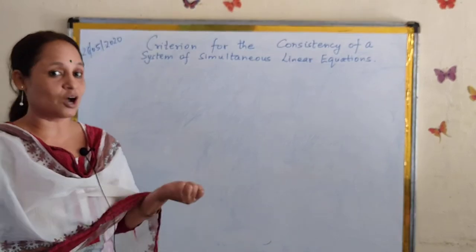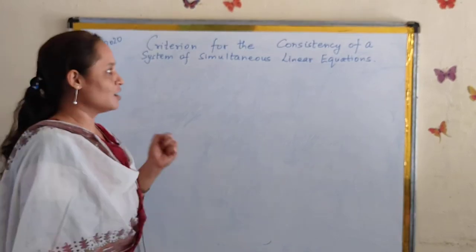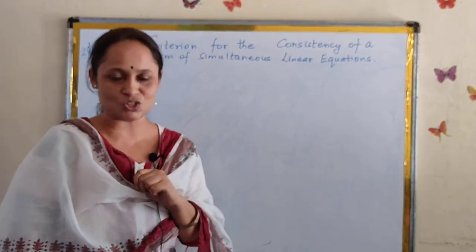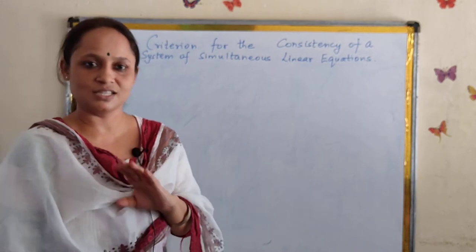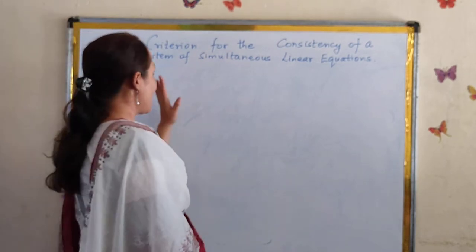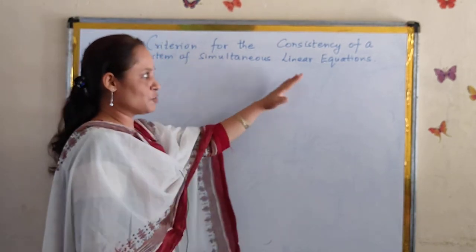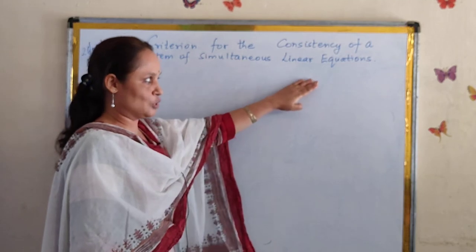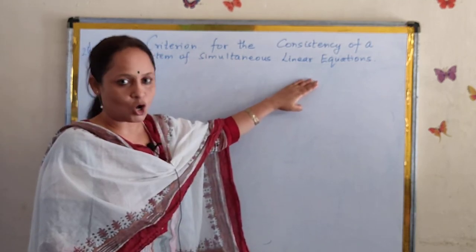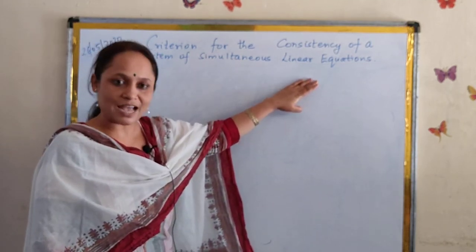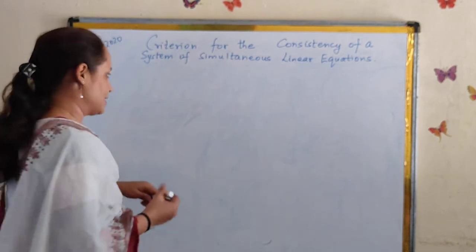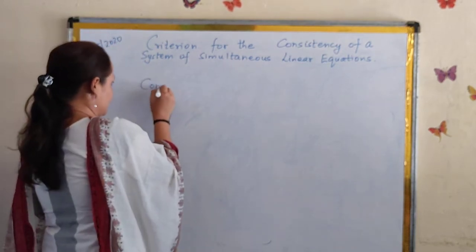In the last class, we learned how to solve a system of simultaneous linear equations in three unknowns. In this video, we are going to learn how to find out whether a system of simultaneous linear equations is consistent or inconsistent. For that, we should know the meaning of consistency and inconsistency.